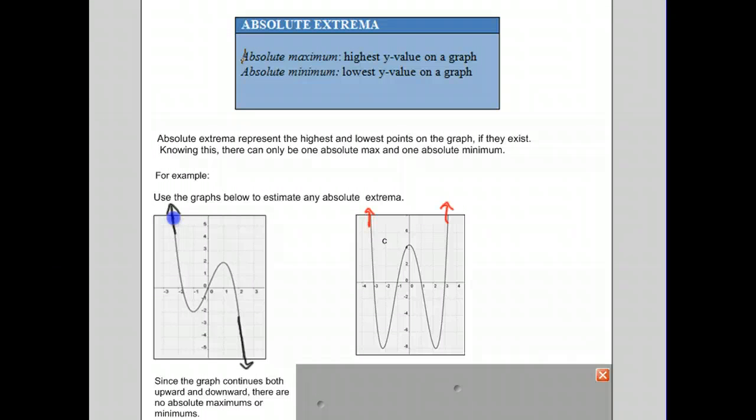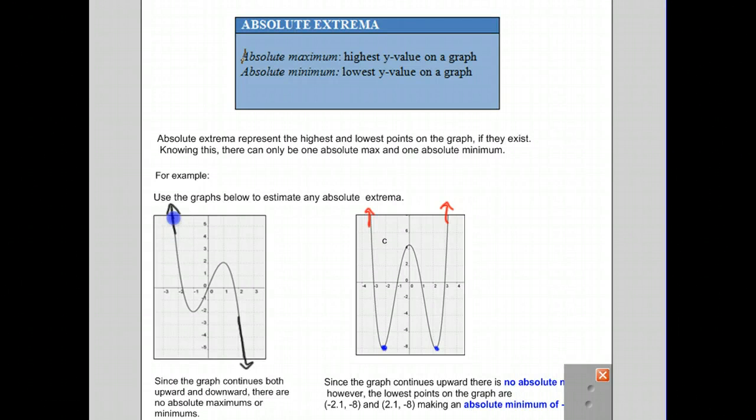But let's look for absolute minimum. The graph has a minimum right there and a minimum right there. This minimum is at negative 8. Two points are exactly at negative 8, so they are considered the absolute minimums.